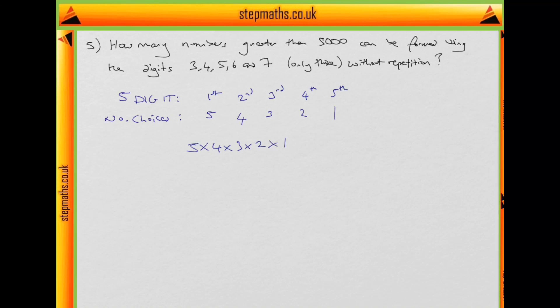Now, we can also make a 4 digit number. So again we can consider the first, second, third, fourth. And we'll have a number of choices.